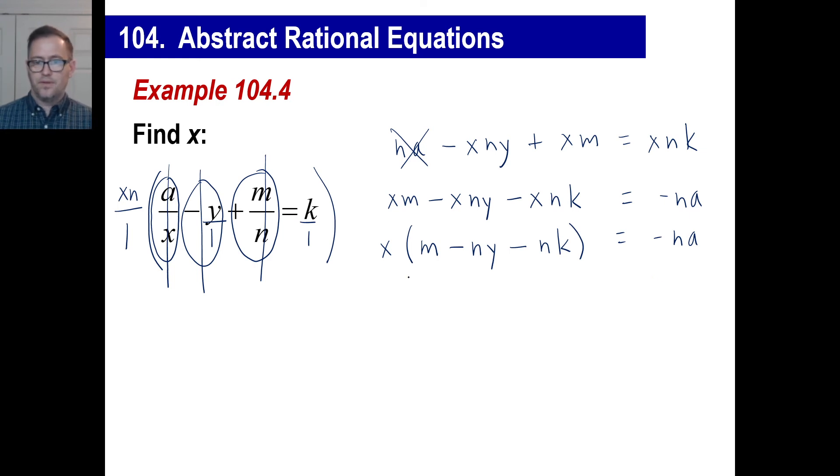All right. There's only one last step to do. That's to divide both sides by this. So we can just go ahead and write it in one step if you want. X equals negative N, A all over M minus N, Y minus N, K. By the way, you know,